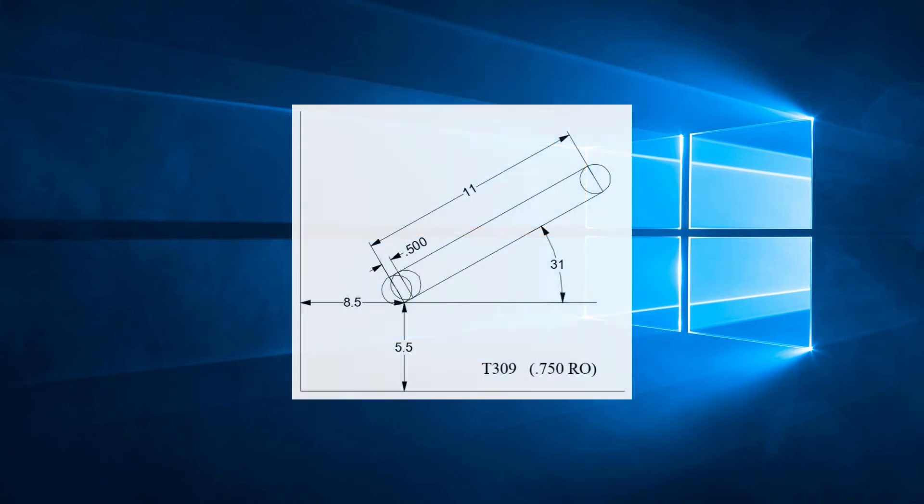If we look at this example, we have a line whose starting point is X8.5 by 5.5. The length of the line is 11 inches from the center of the first hit to the center of the last hit. The angle of the line is 31 degrees and the tool used is 0.75 inch round in station T309.